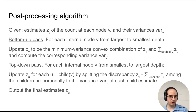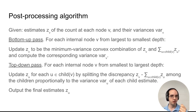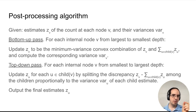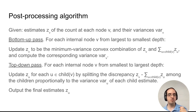Starting at the root and going down to the nodes just above the leaves, we adjust the estimates of the children to guarantee consistency. We look at the discrepancy between the estimate of each node and the sum of the estimates of its children, and apportion the difference among the children proportionally to the variance of each child estimate. This ensures that for every node of the tree, the value of that node will equal the sum of the values of its children.